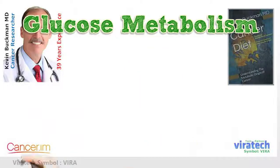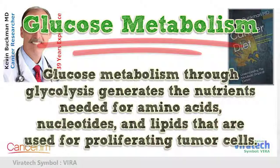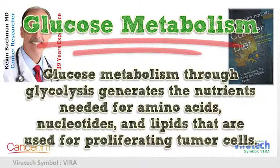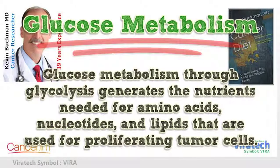Glucose metabolism through glycolysis generates the nutrients needed for amino acids, nucleotides, and lipids that are used for proliferating tumor cells.